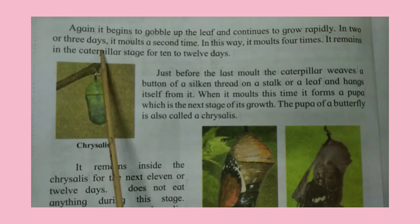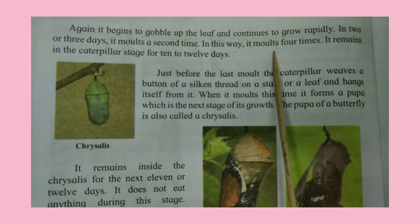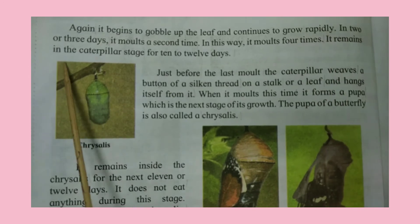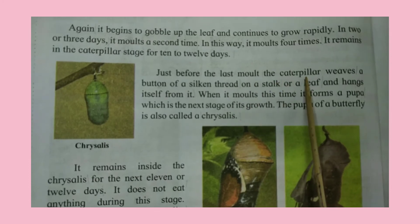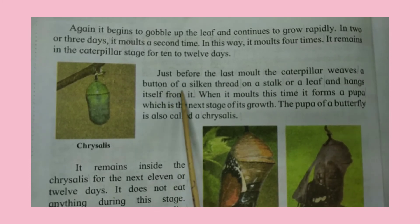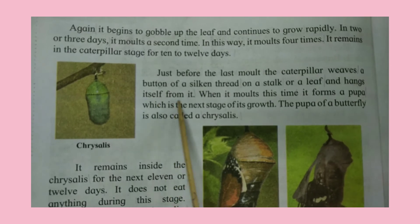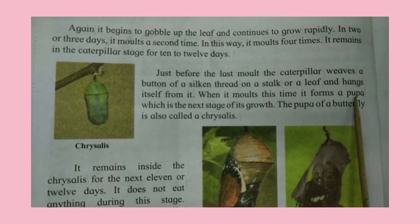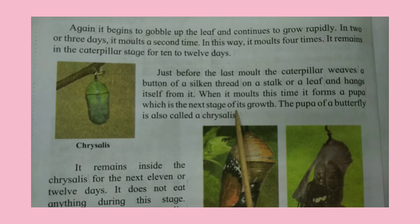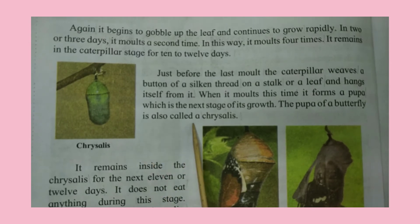In two or three days, it moults a second time. In this way, it moults four times. It remains in the caterpillar stage for ten to twelve days. Just before the last moult, the caterpillar weaves a button of a silken thread on a stalk or a leaf and hangs itself from it. When it moults this time, it forms a pupa, which is the next stage of its growth. The pupa of a butterfly is also called a chrysalis.